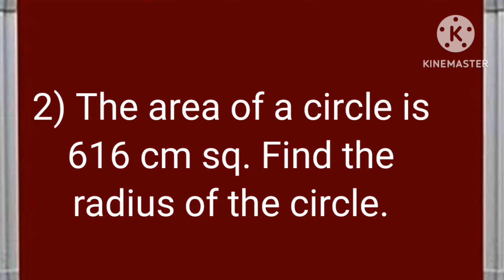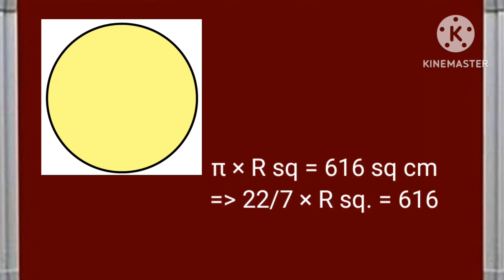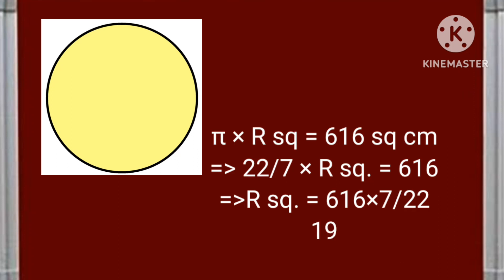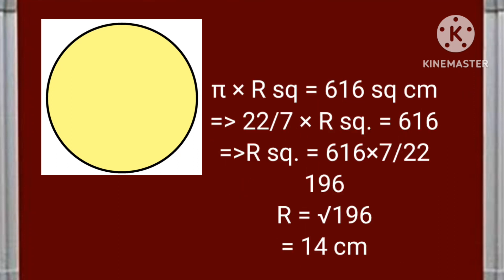My second example is the area of a circle is 616 centimeter square. Find the radius of the circle. Now let's see how to solve the problem. Area pi r square will be equal to 616 square centimeter so I am putting the value of pi here 22 by 7 and then solving the equation r square will be equal to 196 and r radius will be equal to square root of 196 that is equal to 14 centimeter.